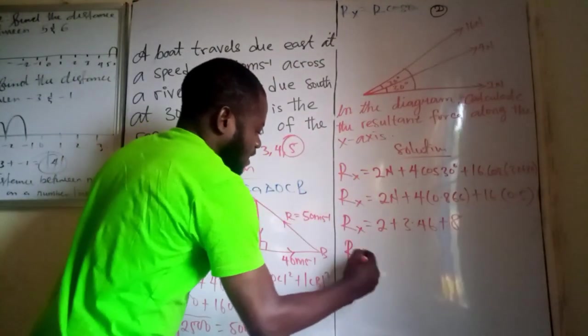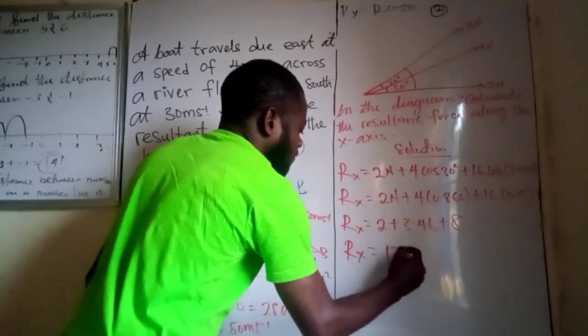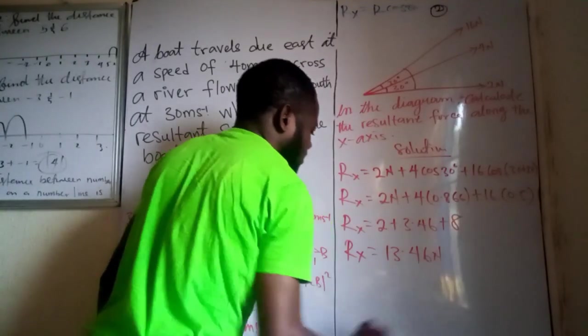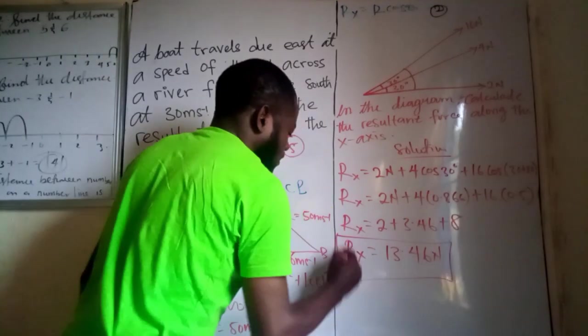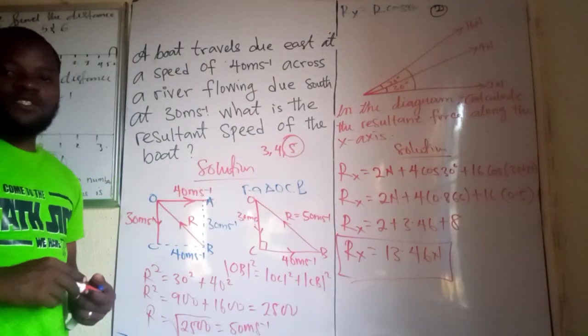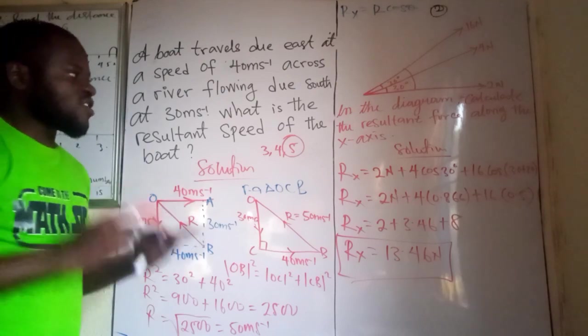So, the resultant force along the horizontal component is 2 plus 3.46 plus 16 times 0.5 would give us 8. So, the resultant force, if I add this together, I would have 13.46. Hence, this is going to be the resultant force along the horizontal component.